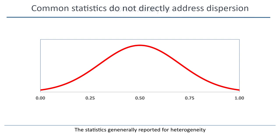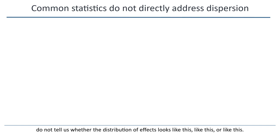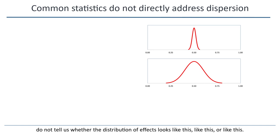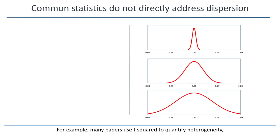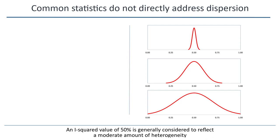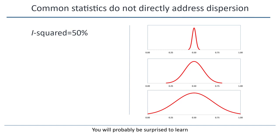The statistics generally reported for heterogeneity do not tell us whether the distribution of effects looks like this, like this, or like this. For example, many papers use I-squared to quantify heterogeneity and to classify heterogeneity as being low, moderate, or high. An I-squared value of 50% is generally considered to reflect a moderate amount of heterogeneity. You'll probably be surprised to learn that an I-squared value of 50% could correspond to this, or to this, or to this.